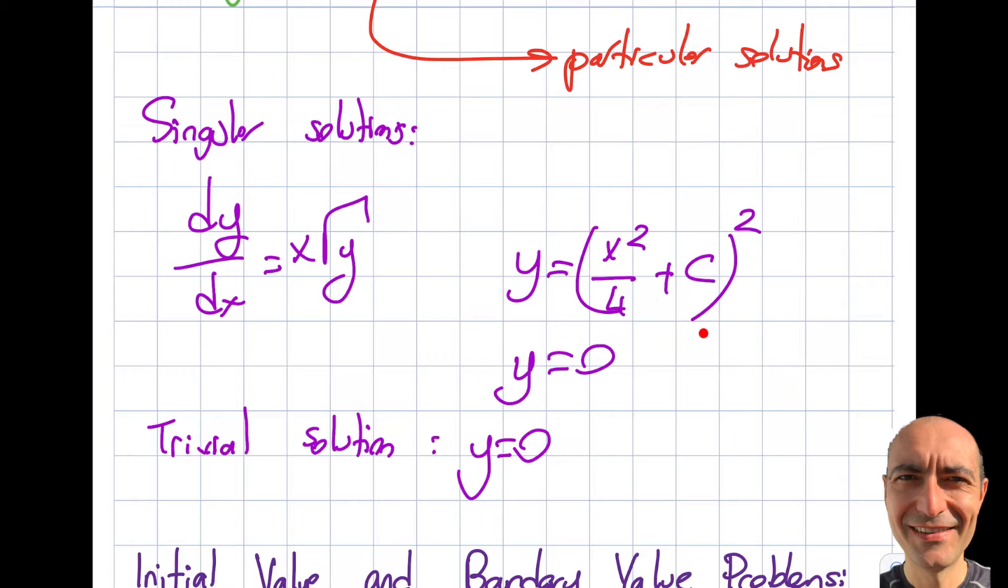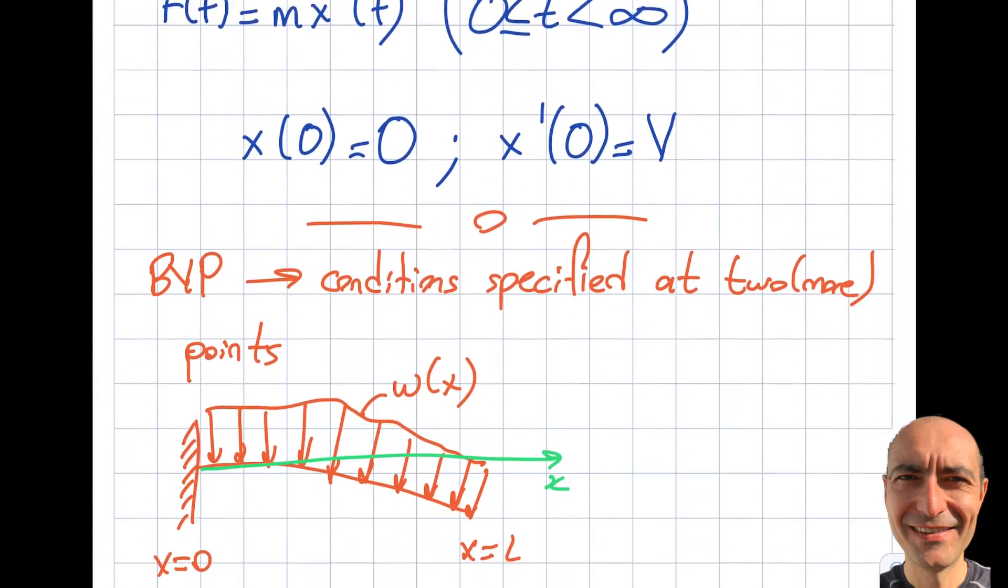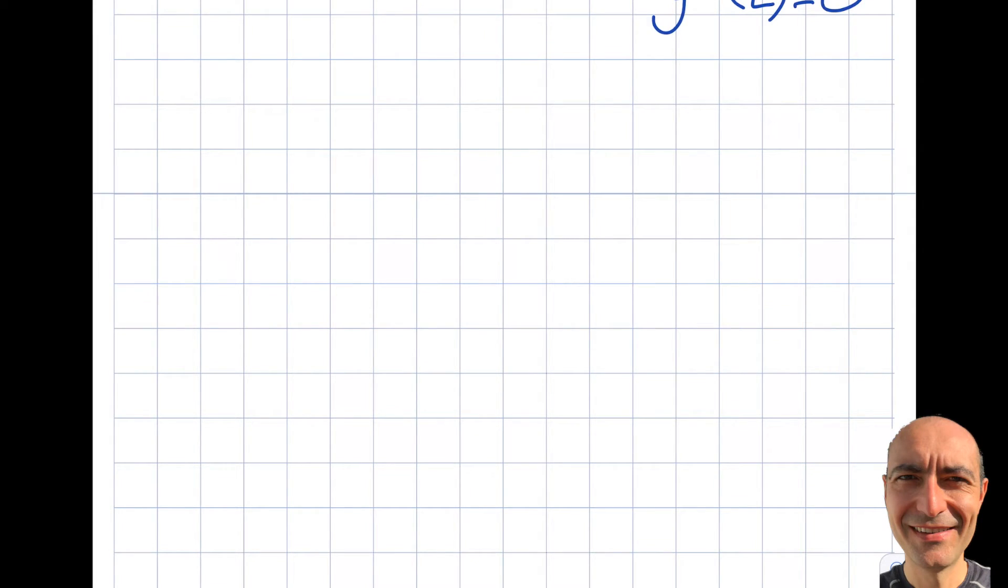So my question is how do you know that there isn't, let's say I'm going to exaggerate, 25 different solutions and you only solve one of them? Do you think you deserve the whole credit? So now I'm going to answer that question for you. The way that I'm going to answer that question will be based on a theorem, and I'm going to call this existence of a unique solution.